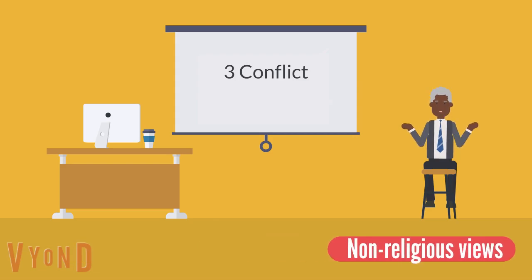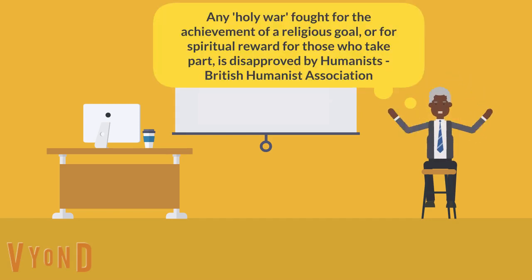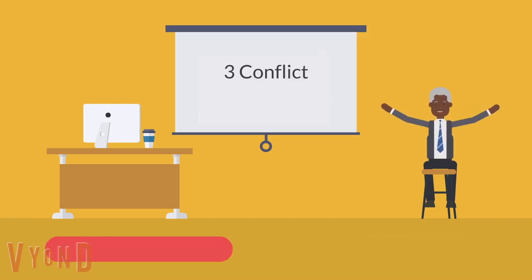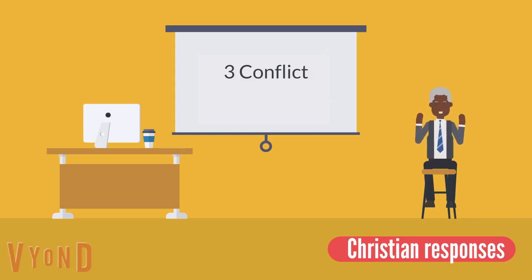Many non-religious people say that religion is the cause of war. For example, the Christian Crusades during medieval times and the conflict between Protestants and Catholics in Northern Ireland. Humanists say that if religion was abolished there would be less conflict and fewer wars. Christians say that what often seems to be a religious conflict is actually about culture. They claim all religions call for peace and that Christianity teaches people to love their enemies. Some people misinterpret religious teaching.